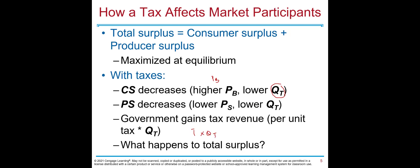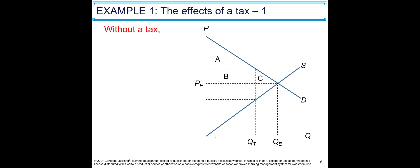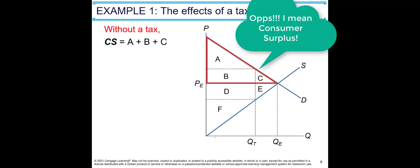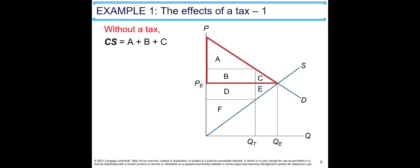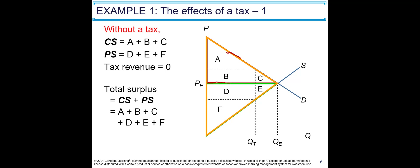What happens to total surplus with tax? Without tax, consumer surplus is the area between the equilibrium price and the demand curve — the triangular area A plus B plus C. Producer surplus is the area between the equilibrium price Pe and the supply curve — the area D plus E plus F. Since there's no tax, tax revenue is zero. Total surplus is A plus B plus C plus D plus E plus F.